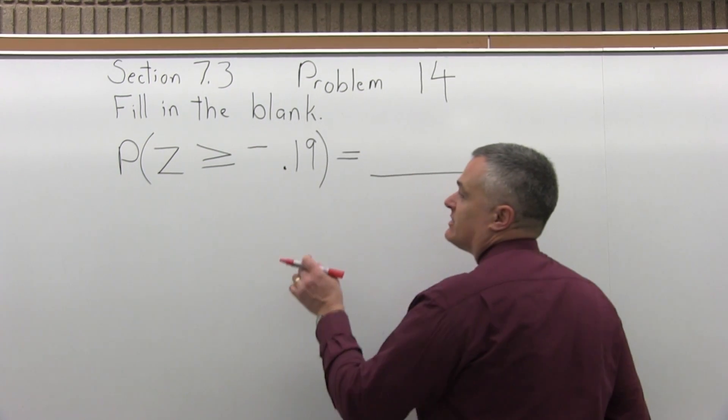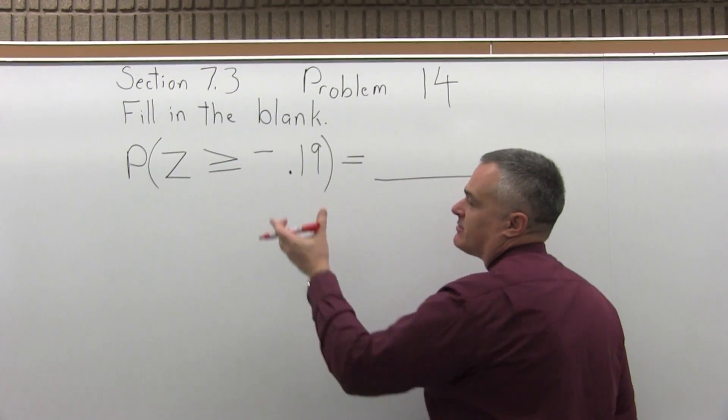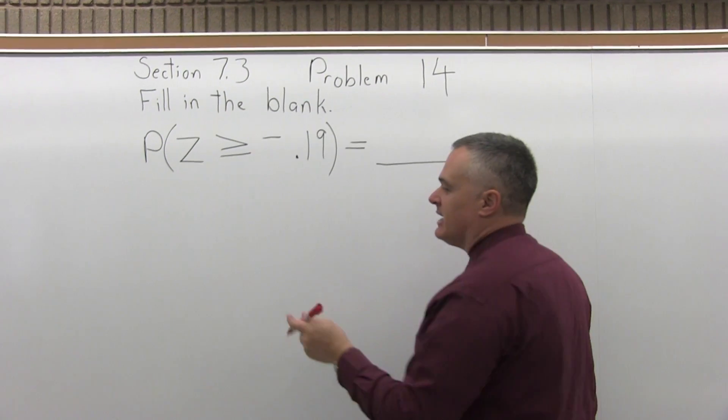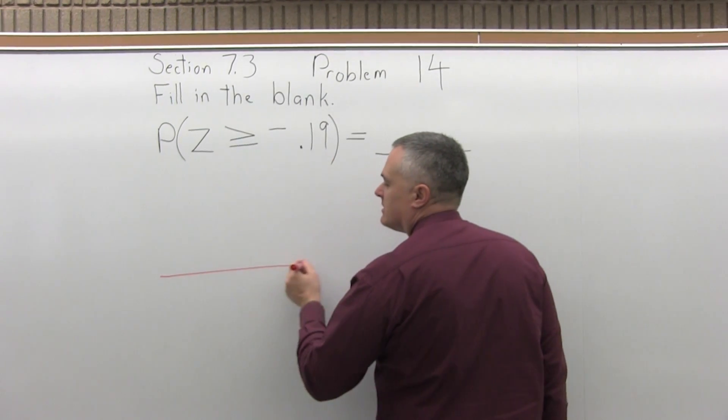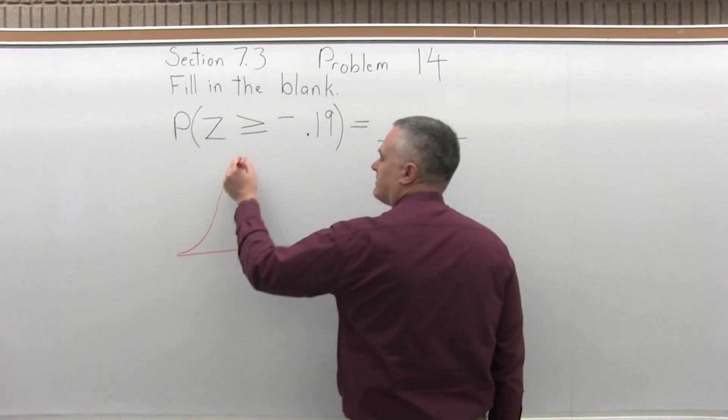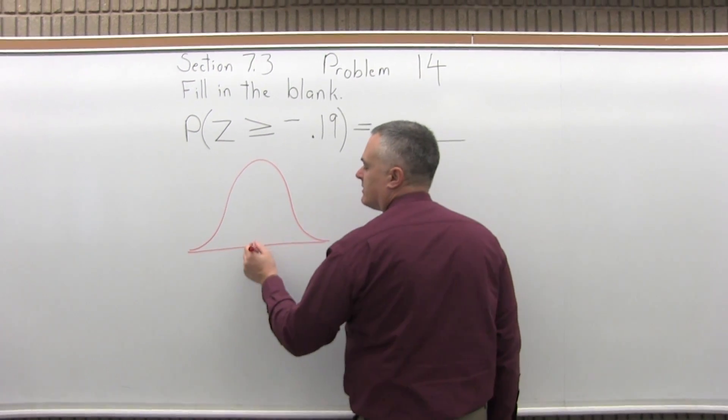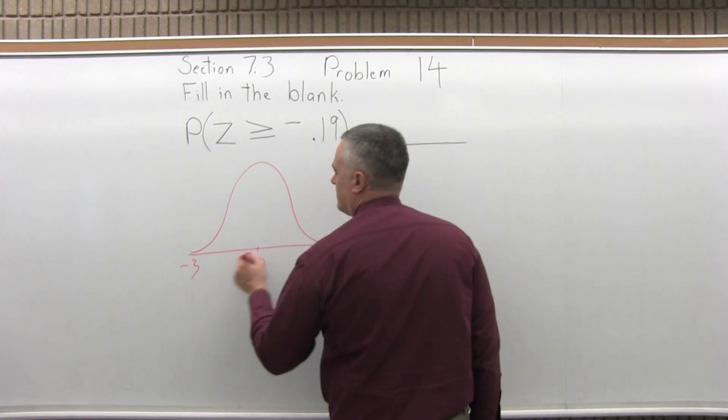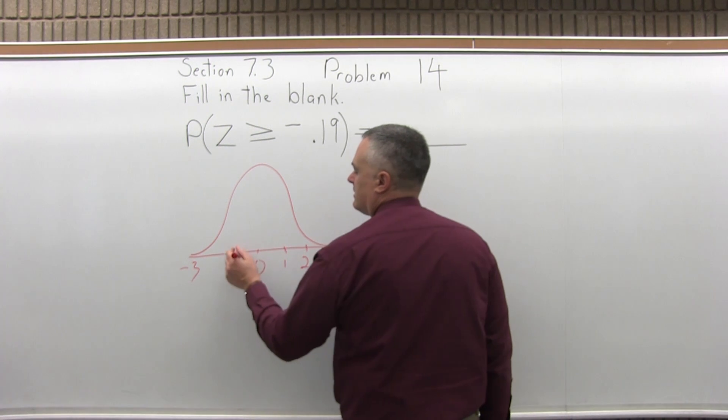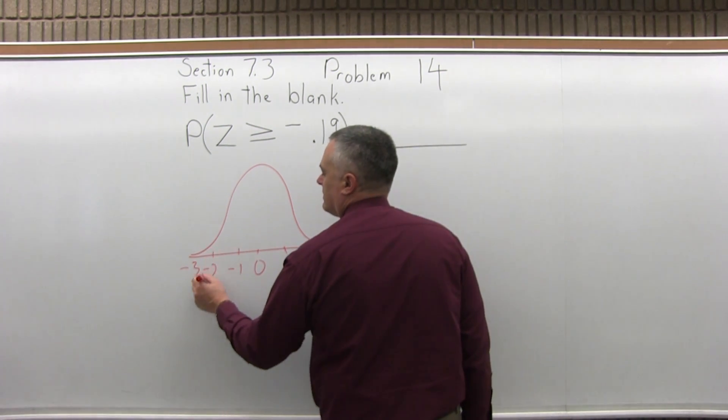So I don't really need to see a graph. I know it's a greater than question, it's going to be 1 minus the chart value, but I think it helps. So let me draw the graph, start with a bell curve, like that.